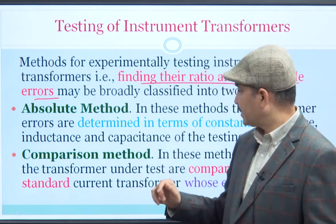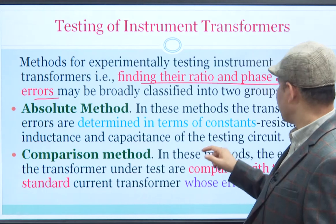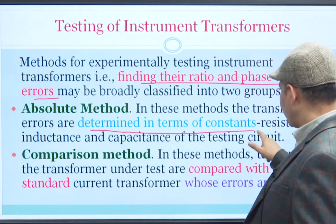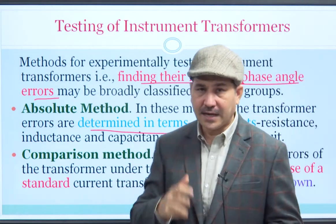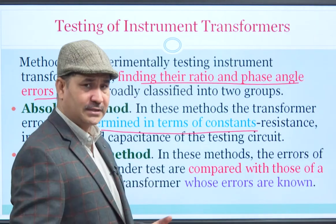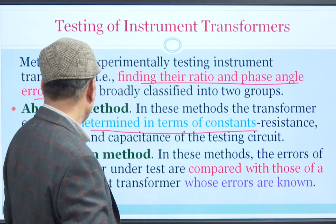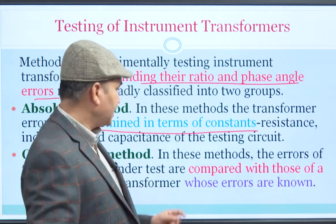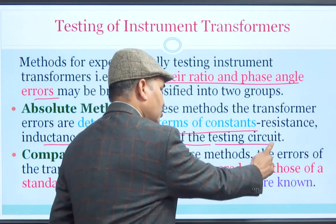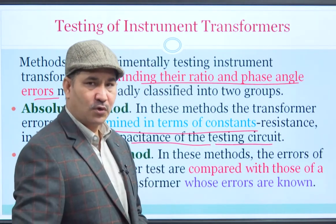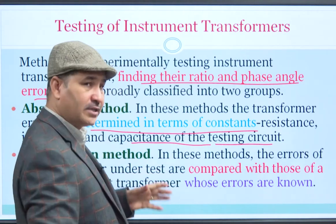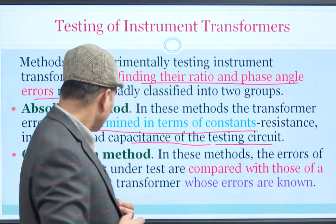In absolute method testing, the transformer errors are determined in terms of constants — what are those constants? They are like resistance, inductance, and capacitance. In terms of those parameters, you evaluate the testing circuit, and eventually the whole purpose is to find out the errors.